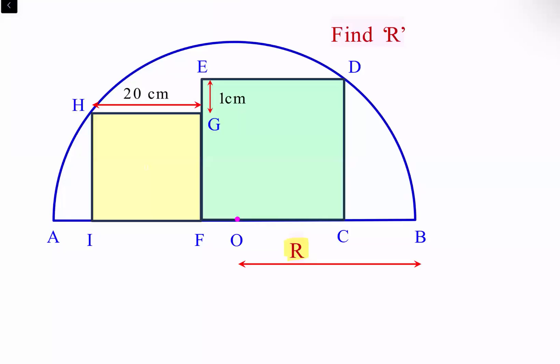In today's question a semicircle is given with radius R. Two squares are inside the semicircle with one vertex touching the arc of the semicircle. The length of the smaller square is 20 centimeters and the bigger square is one centimeter higher than the smaller one. Using this data we have to find the radius of the circle.